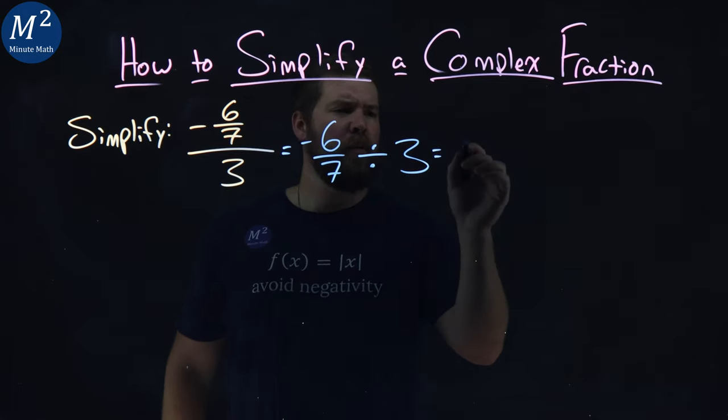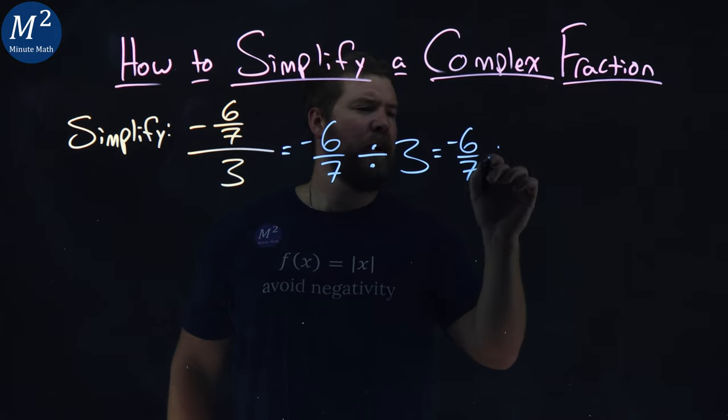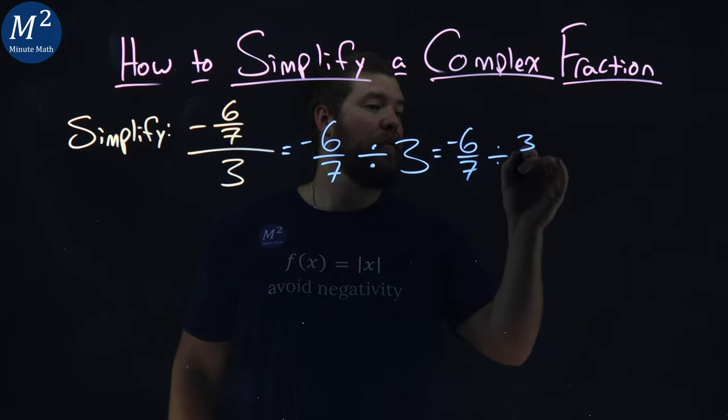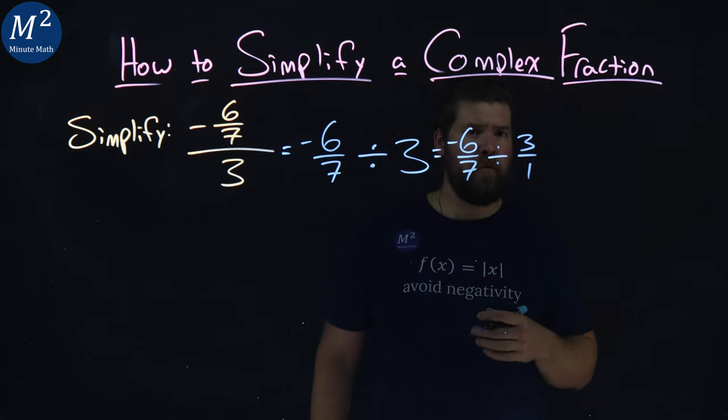Now, what do we know? Well, negative six-sevenths divided by three is the same thing as three over one, right? Three is the same as three over one.